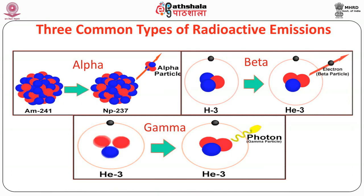What is alpha decay? When americium-241 decays to neptunium-237, an alpha particle comes out. Then there is beta decay: when tritium comes to helium-3, a beta decay takes place and an electron comes out. Gamma decay occurs when an isotope transitions to another state and the excess energy in the nucleus comes out in the form of photons. So we have three different kinds of decay — alpha, beta and gamma — and most radioisotopes decay by one of these modes.